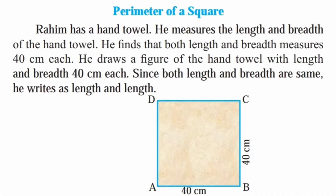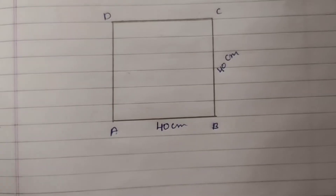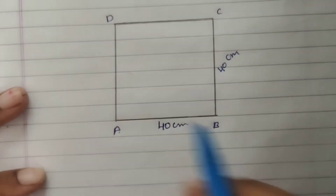Rahim has a hand towel. He measures the length and breadth of the hand towel. He finds that both length and breadth measure 40 cm each. He draws a figure of the hand towel with length and breadth 40 cm each. Since both length and breadth are the same, he writes it as length and length. This is the square — Rahim has a square shape.